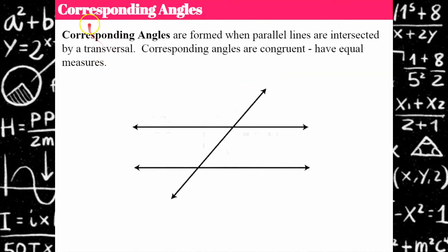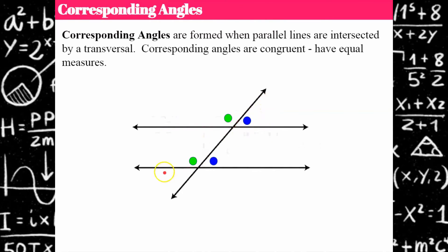Now I'm going to introduce some new vocabulary: corresponding angles. Any time you have parallel lines intersected by a transversal, we have corresponding angles. We want to identify these because corresponding angles in a diagram like this are congruent — meaning they have equal measures. This green circle is a corresponding angle to this angle here, and this angle corresponds to this angle. There are two more pairs: below and to the left, and below and to the right.